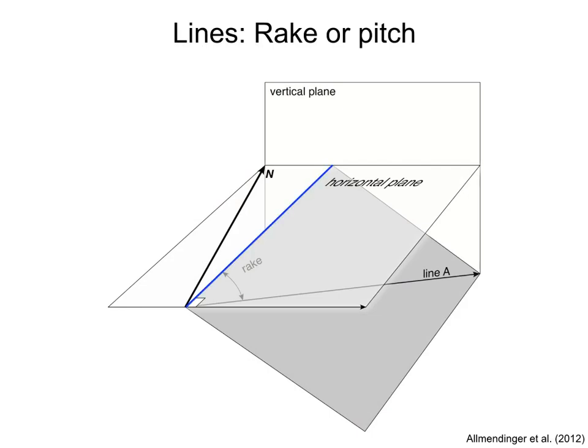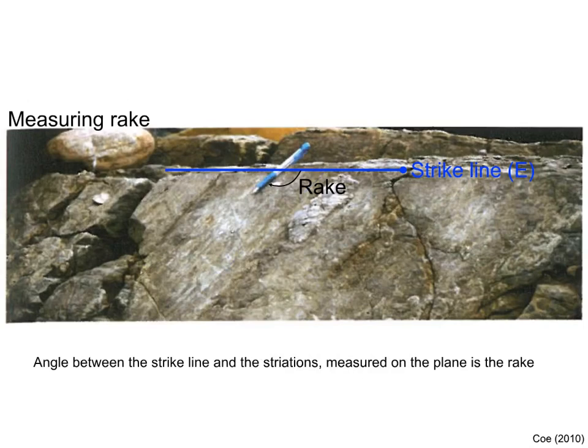The rake is the angle that the line makes with the strike line of the plane, the blue line in the figure, measured on the plane. It is an angle between 0 and 180 degrees. This angle is simpler to measure — you just need to place a protractor on the plane and measure the angle between the strike line and the line. Here as an example, we measure the rake of striations, highlighted by the pen, on a fault plane. Notice that when reporting the rake, we need to say from which end of the strike line we measure it. For example, the rake of the striations is 130°, east.